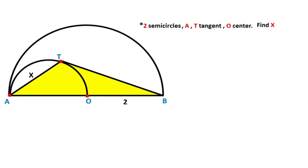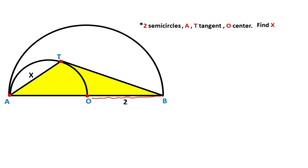Hello everyone. In this video we have two semi-circles. Point A and point T are given as tangent points, and O is given as the center of the big semi-circle. The radius of the big semi-circle is given as 2, and the question is: what is the length of x?